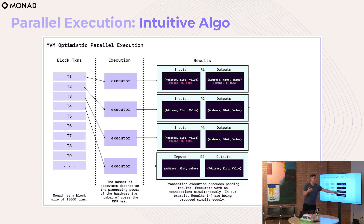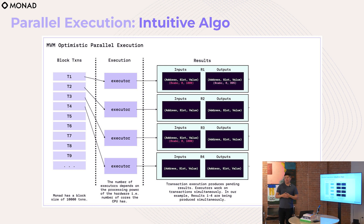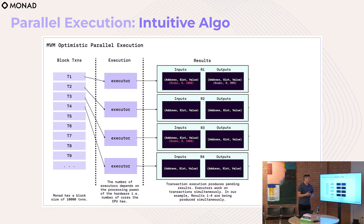We then have these pending results and step through to commit them. We can commit transaction one — input a thousand, output 995 — without any issue. We can commit transaction two without any issue. But when we get to pending result three, it has an input of a thousand, and we can't commit it because the running state for this slot is now 995. So we just go re-execute it. It's a really simple, intuitive algorithm. Everyone asks: what if all the transactions are related to each other and you have to keep re-executing?